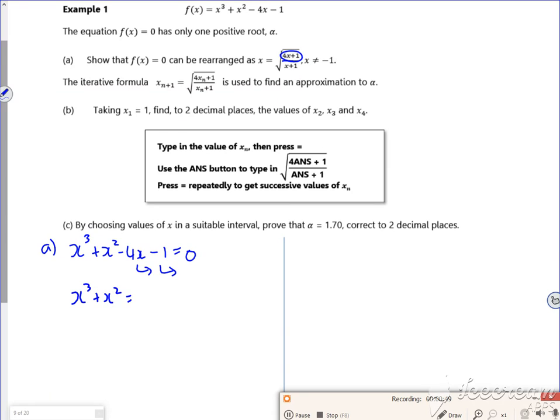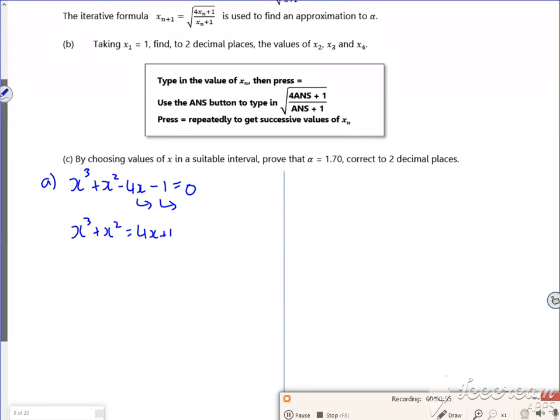So x³ + x² is equal to 4x + 1. I'm divided by x + 1, so let's take out x + 1 as a factor. So that will be x²(x + 1) = 4x + 1. I'm just trying to kind of build it, really. I can divide through and then I'm just going to square root it.